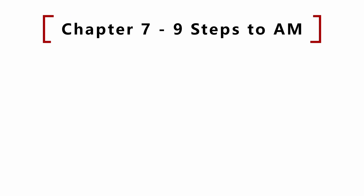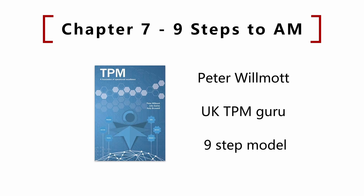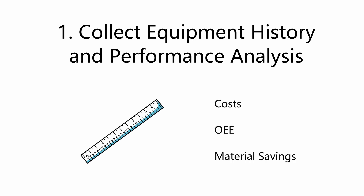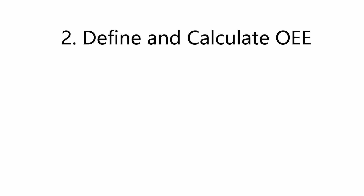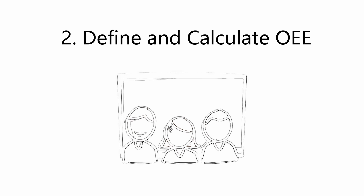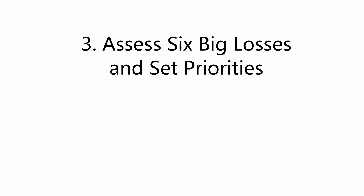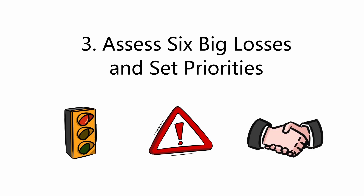Chapter 7: The Nine Steps to Implement Autonomous Maintenance. Peter Wilmot, UK TPM guru, has proposed a widely used nine-step model. This is a long and thorough process — absolutely not a quick fix. Step 1: Collect equipment history and performance analysis. This step focuses the project and sets measurement objectives, for example cost, OEE, and material savings. Step 2: Define and calculate OEE. Clarify the meaning and interpretation among team members, set up an OEE display board at the shop floor, and brainstorm possible causes displayed on a chart. Step 3: Assess the six big losses and set priorities, involving analysis and agreeing on priorities with management.